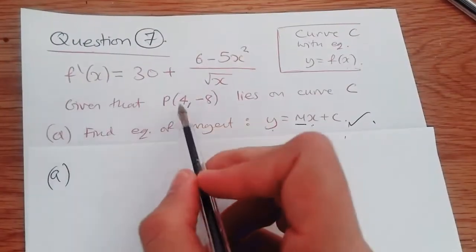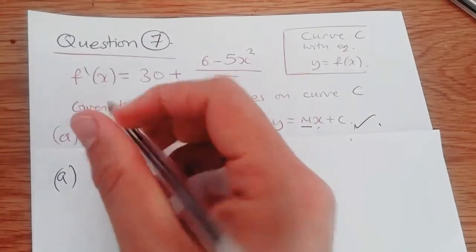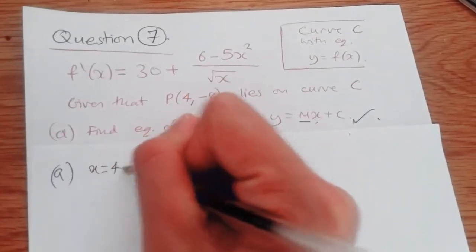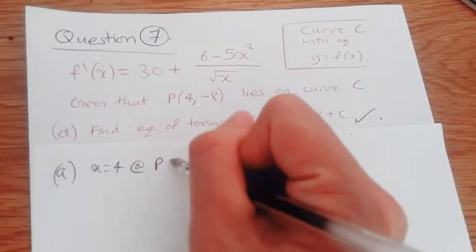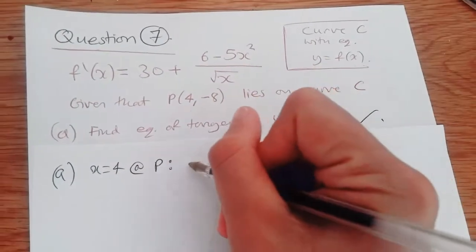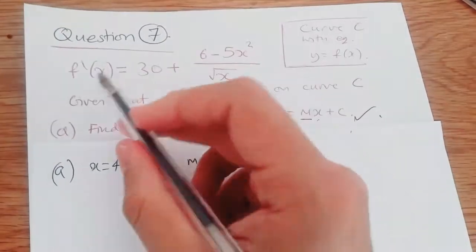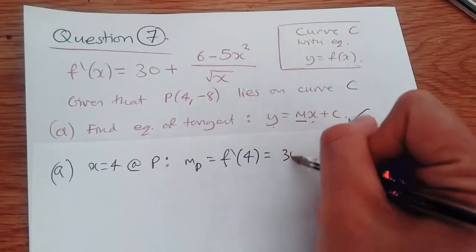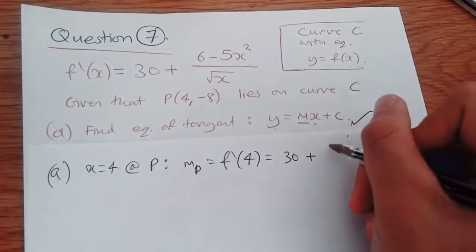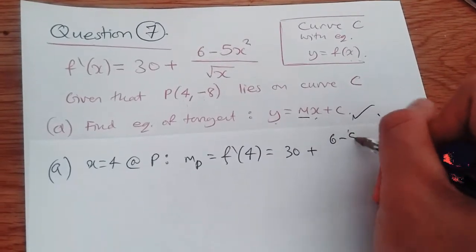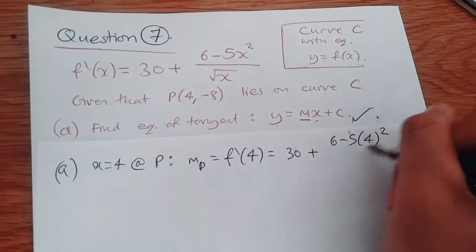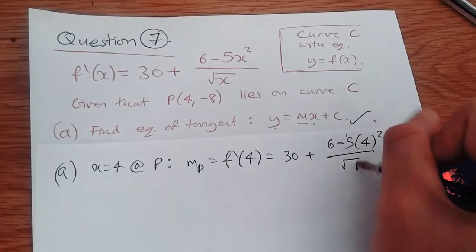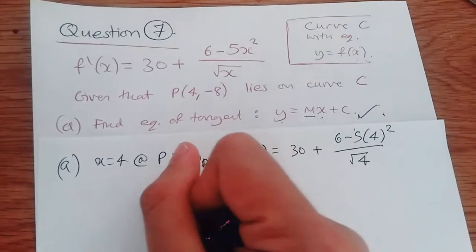So for part A, we can say when x equals 4, in other words at point P, then we can find the gradient of P using this equation. So f'(4) equals, then we just plug in 4 to this equation: 30 plus (6 minus 5 times 4²) over the root of 4. Now this is just a case of solving.